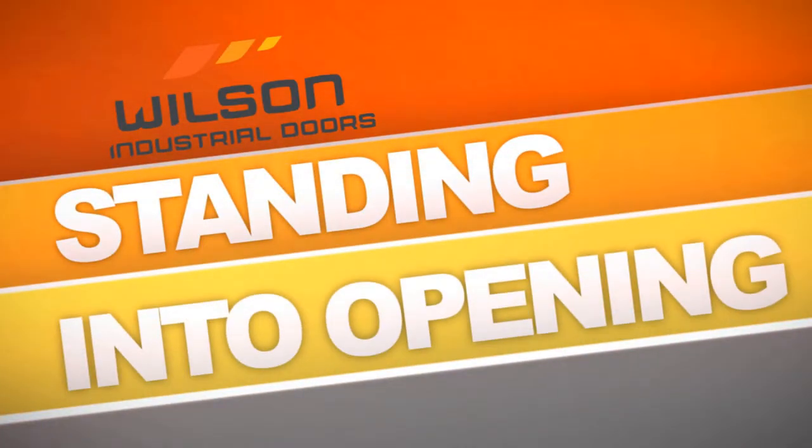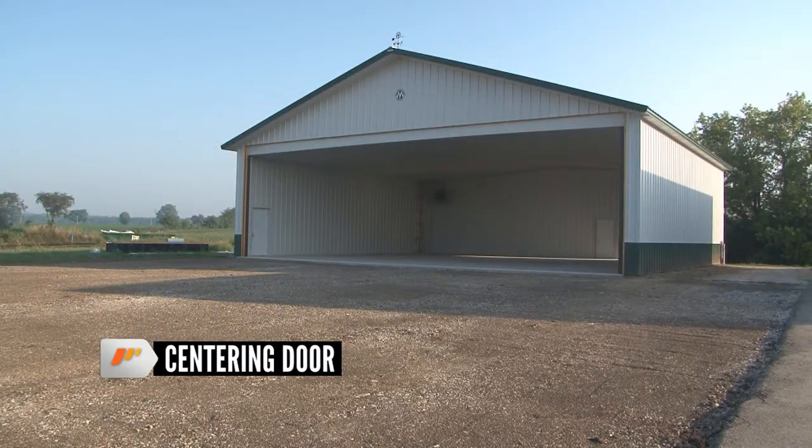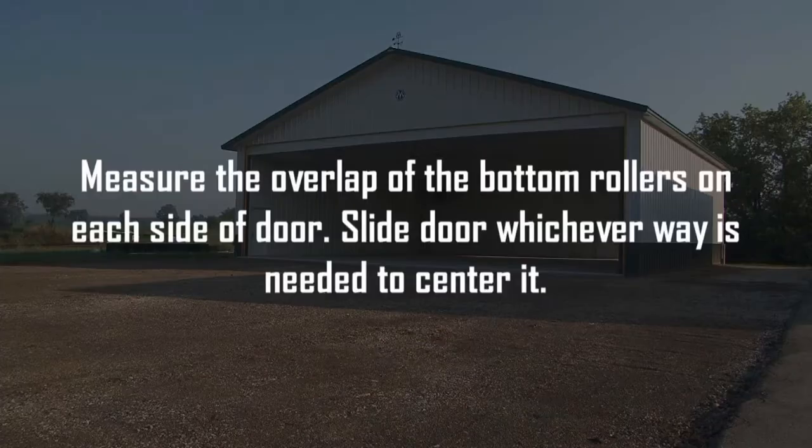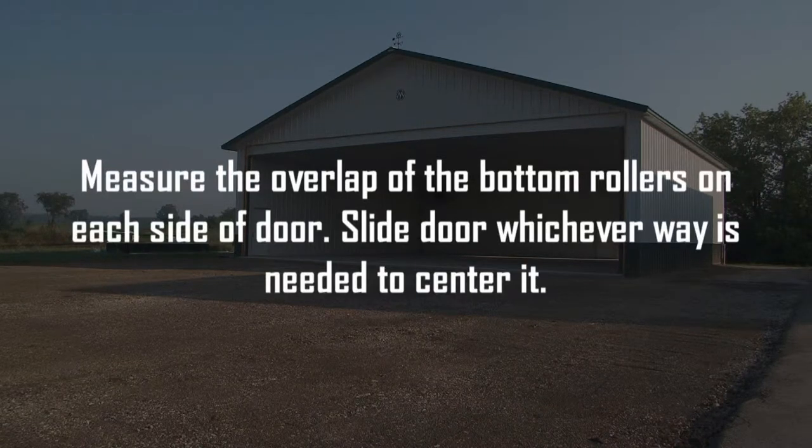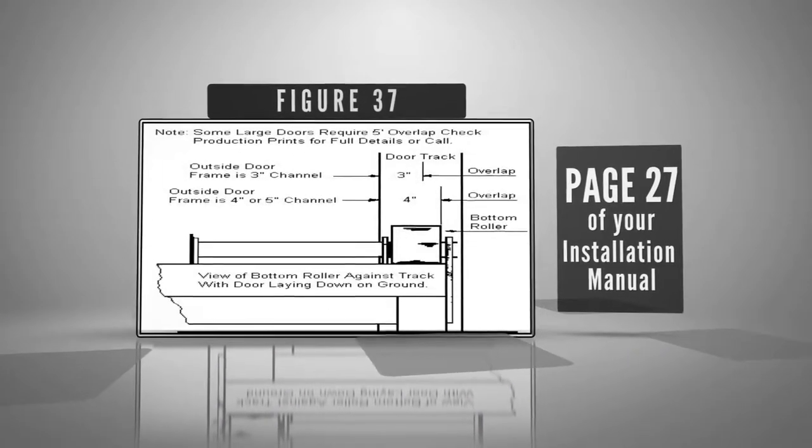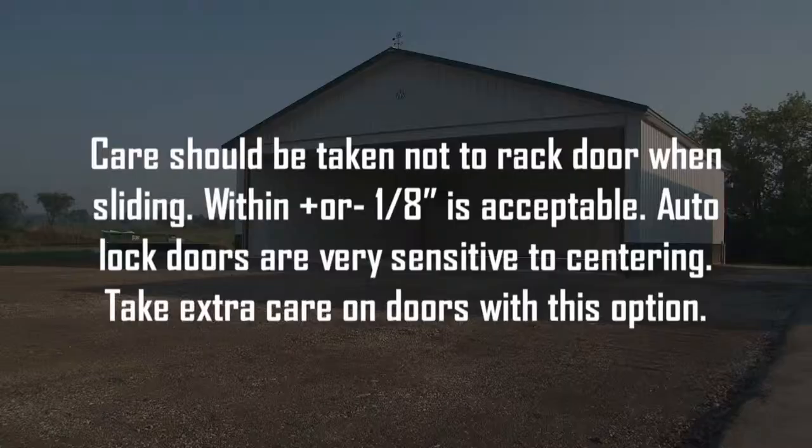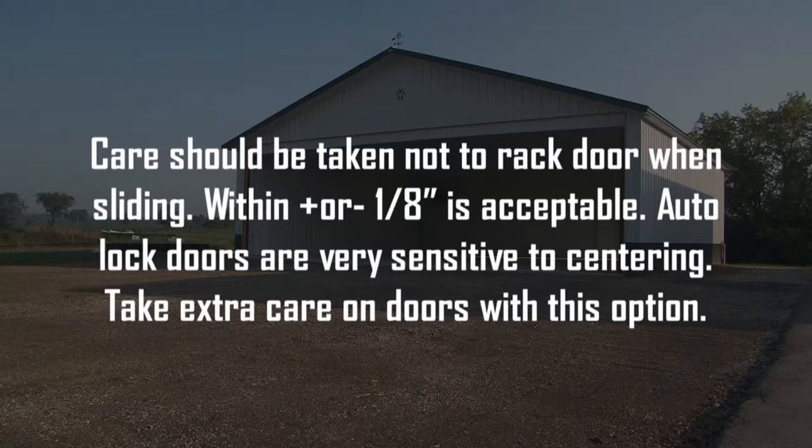Standing into opening and attach hinges. Centering door: Measure the overlap of the bottom rollers on each side of door. Slide door whichever way is needed to center it. See figure 37. Care should be taken not to rack door when sliding. Within plus or minus one eighths inch is acceptable. Auto lock doors are very sensitive to centering. Take extra care on doors with this option.